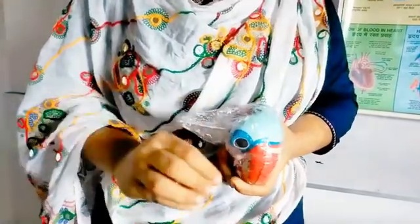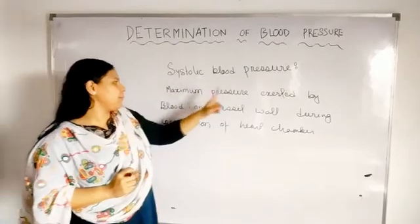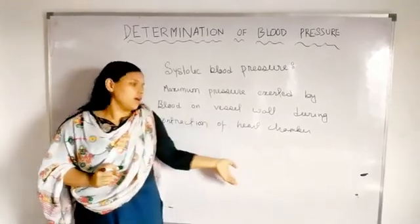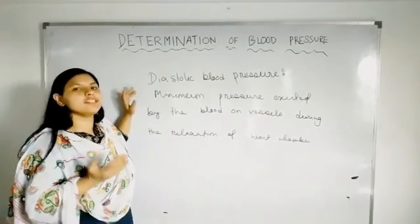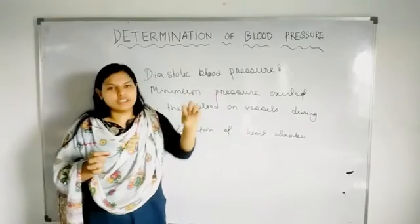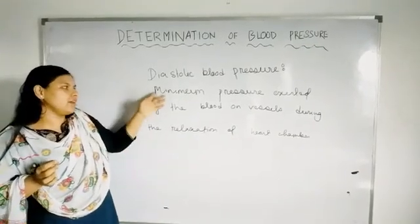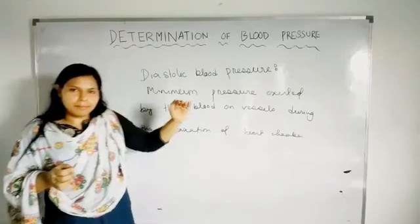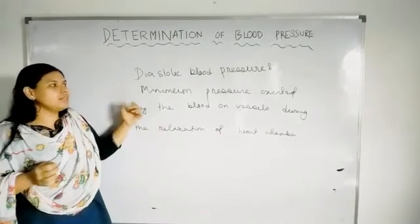When the ventricle is relaxed, the pressure falls down and that is called the diastolic pressure. Theoretically, the systolic blood pressure is the maximum pressure exerted by blood on vessel walls during contraction of the heart chamber. Diastolic is exactly the opposite — minimum pressure exerted by the blood on vessels during the relaxation of the heart chamber. Maximum during contraction — that is systolic. Minimum during relaxation — that is diastolic. Very easy.